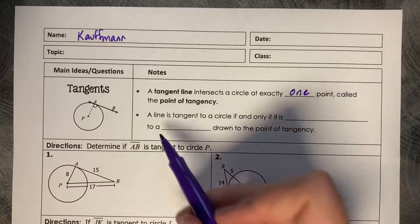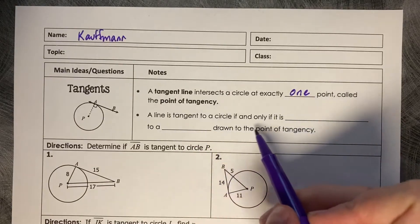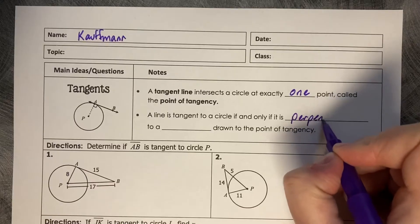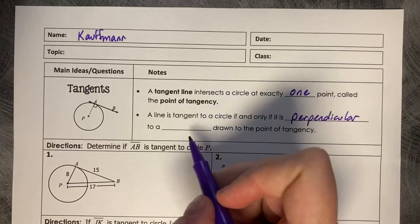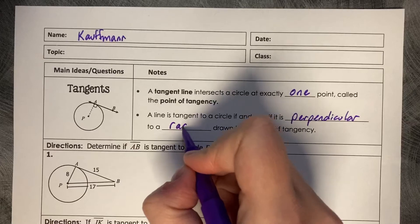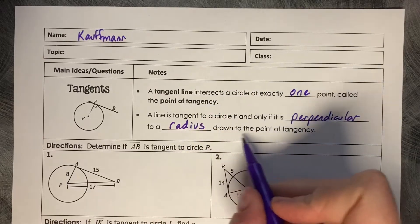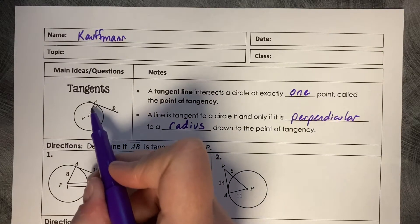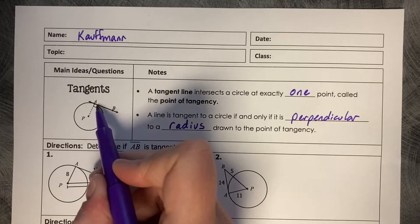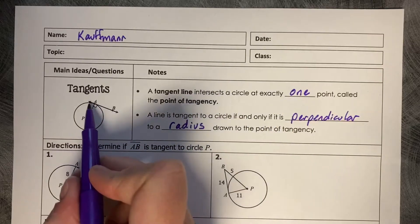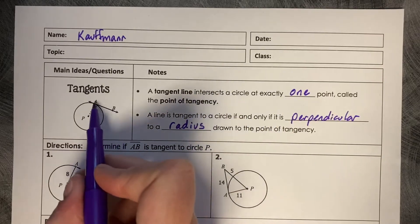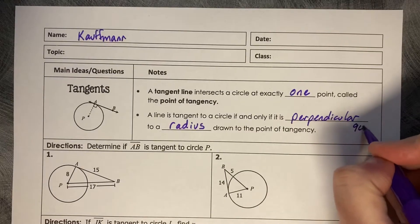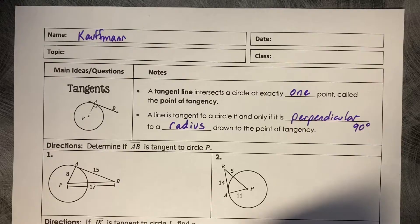A line is tangent to a circle if and only if it is perpendicular to a radius drawn to the point of tangency. This diagram shows that PA is a radius, perpendicular to the point of tangency at A. So AB is perpendicular to PA — perpendicular meaning a 90 degree angle, a right angle.